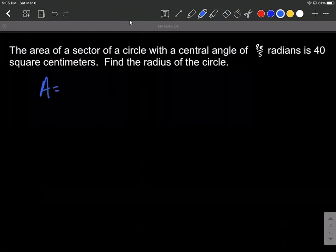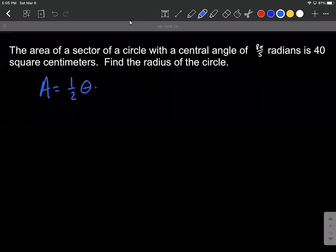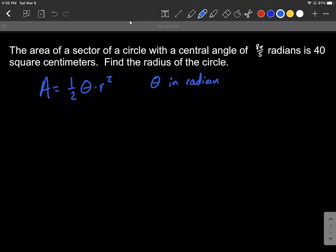All right, so we have area equals one-half times theta times r squared, and theta in this formula is in radians, which is kind of nice, right? It was already given to us in radians.